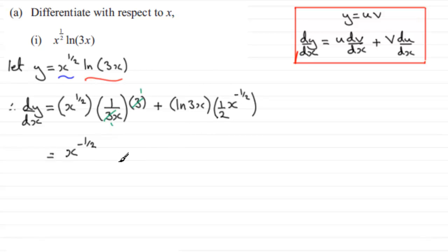And then for this term, I'd want to put the half x to the minus half before the natural log of 3x. So I've got a half x to the power minus a half, and then multiply that by the natural log of 3x. I don't really need any brackets there. It's not ambiguous anymore, so that's acceptable.